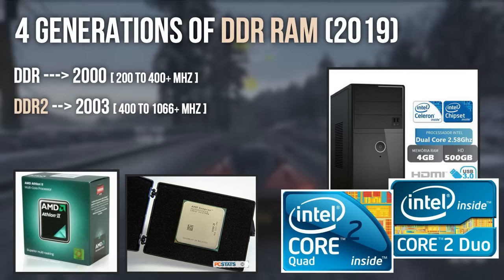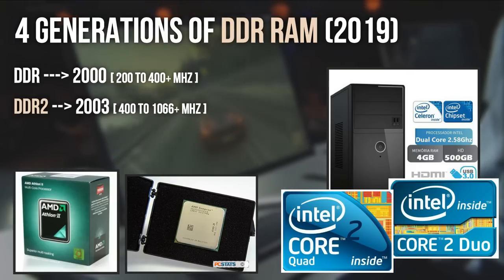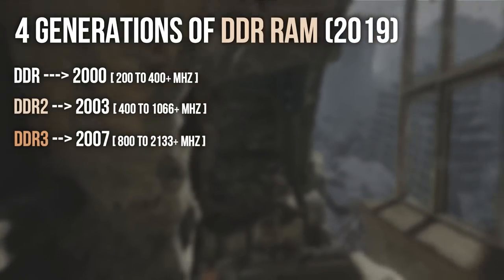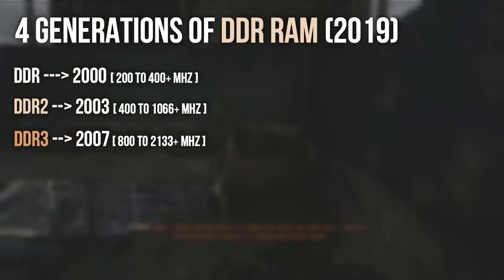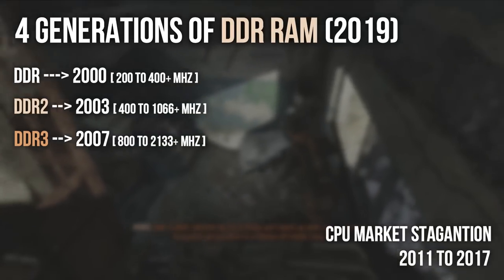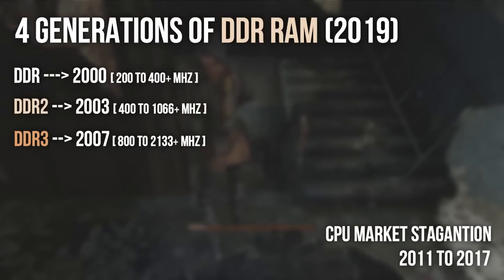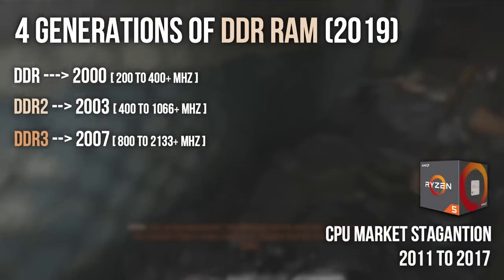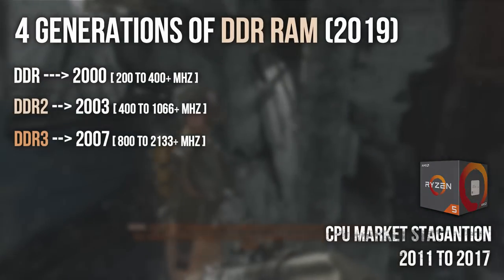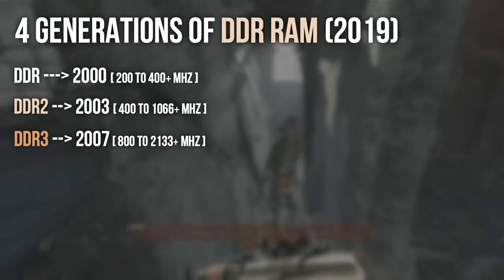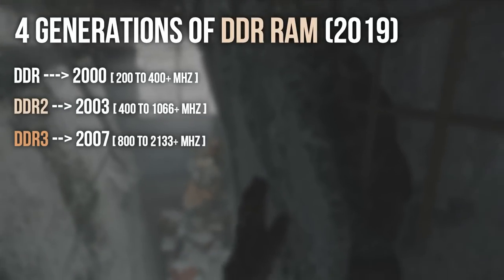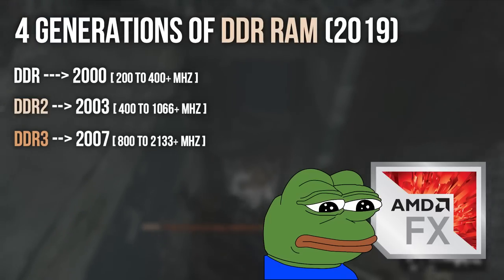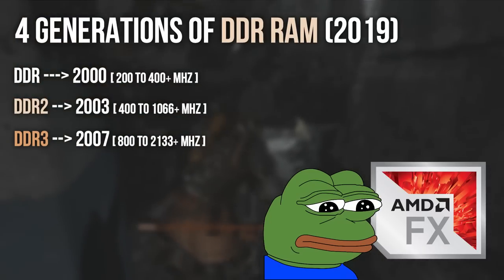DDR2 was also used in old AMD Athlons and Semprons — not so easy to find nowadays but still findable. DDR3 was released back in 2007 and is still vastly used, mostly due to the CPU market stagnation from 2011 to 2017 when Ryzen CPUs launched. In that time, people with third and fourth generation Intel processors weren't upgrading to the sixth or seventh generation since it wasn't worth buying a new CPU, motherboard, and RAM kit for the same quad-core story.